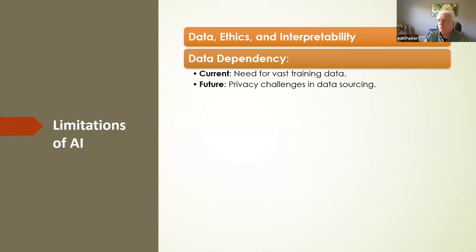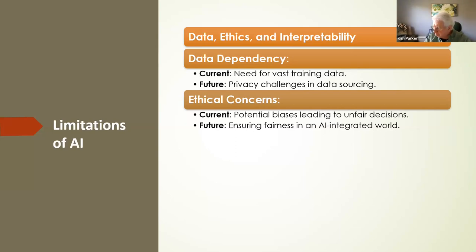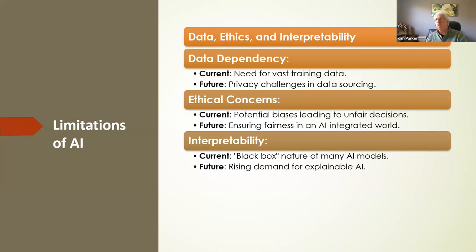We've also got privacy and ethical things to address. The potential for bias has been there on the internet — if we're using the net to generate presentations and other things, there's a potential it won't be fair. How do we ensure fairness in an AI-integrated world? That leads to Brave New World and 1984. Interpretability is also a concern — a lot of the models are black boxes. You plug it in and call it, but you don't really know what you're getting. There is a rising demand for explainable AI.